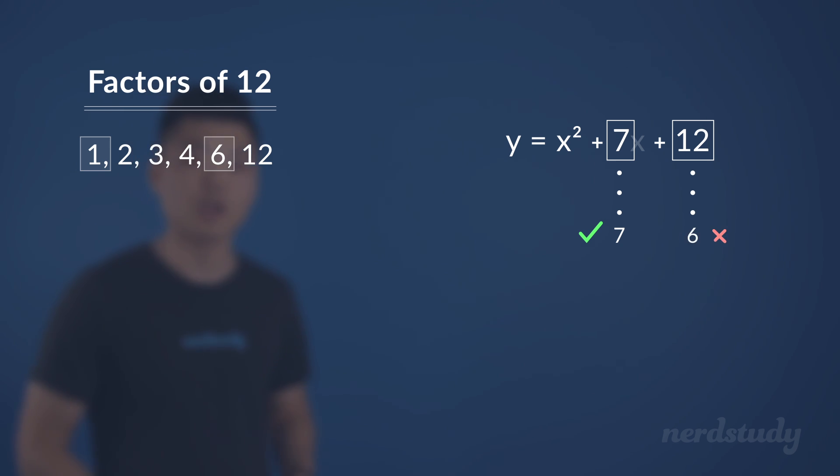But when we try 3 times 4, we get 12. And when we add 3 and 4 together, we get 7. So there it is. We know that we can use these two numbers to factor this equation to be y equals x plus 3 times x plus 4.